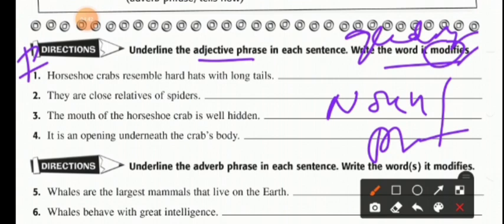First of all, students should identify or recognize which is the prepositional phrase in the given sentence. The first example is: horseshoe crabs resemble hard hats with long tails. Horseshoe crabs is a noun — it is a type of sea creature. Resemble means look like or have a similar appearance.